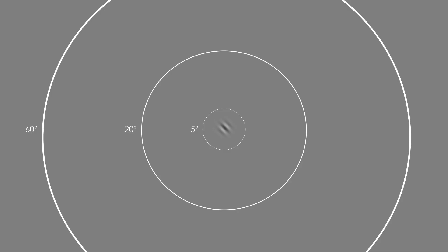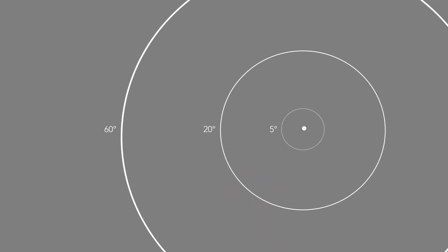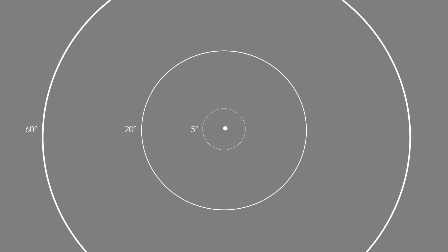Our sensitivity to motion also varies across the retina. In fact, unlike our acuity, it peaks in the mid-periphery, maybe to help us identify and avoid sudden threats. So why hasn't this also been used to save bandwidth? Well, in part, because it's not quite that simple.